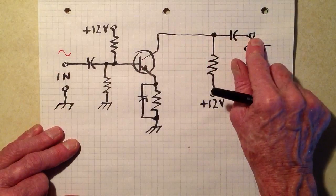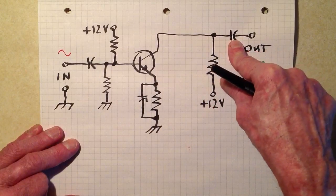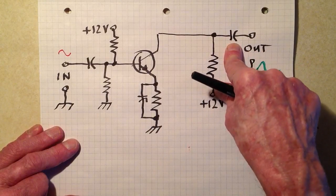But signals can get through here. These are known as blocking capacitors because they block the DC.